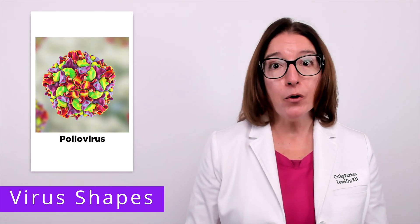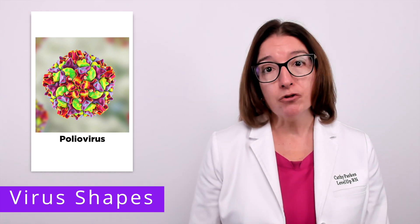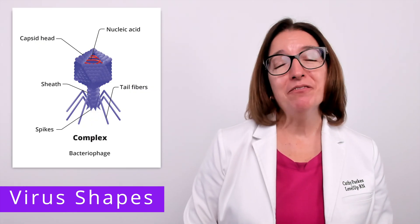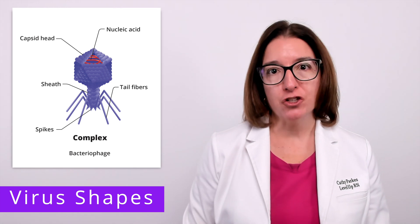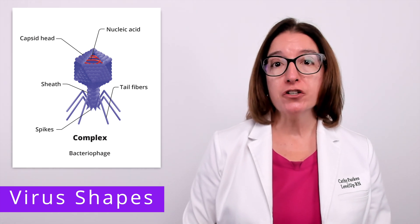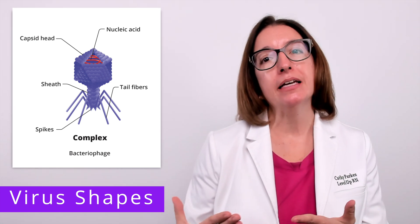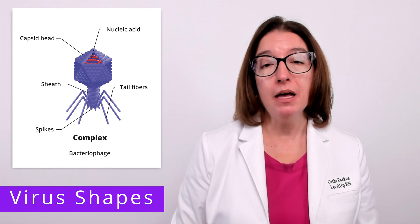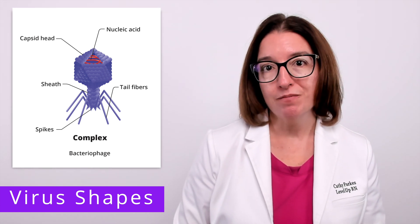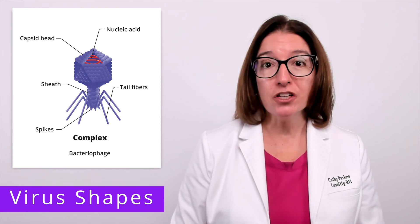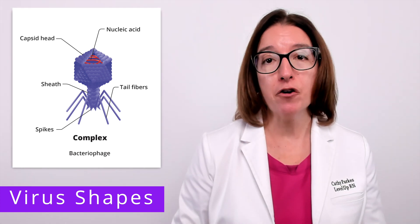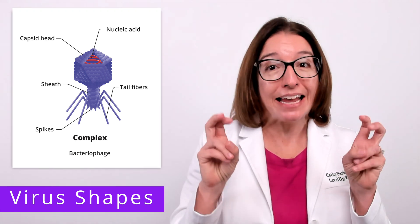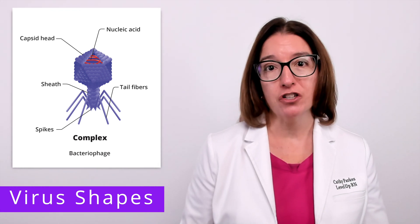Of note, helical viruses and polyhedral viruses may also have an envelope. Lastly, some viruses will have a complex shape, which includes features of both helical and polyhedral viruses. The most common example of a virus with a complex shape is a bacteriophage. As you can see in the image, the head of the bacteriophage has a polyhedral shape, whereas the tail of the bacteriophage has a helical shape.